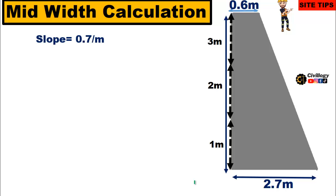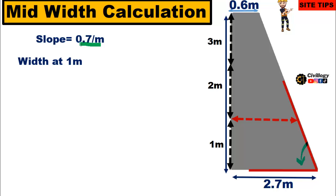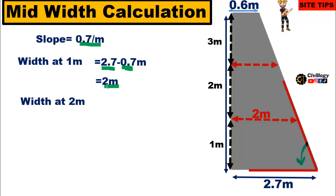Now let us calculate the widths at a height of 1 meter. When erecting the formwork for pouring of concrete, the slope per meter is 0.7 meters or 70 centimeters. So what will be the width at 1 meter? We will subtract 0.7, which is the slope per meter, from the base of the toe wall of 2.7, and we will get 2 meters. So the width at 1 meter will be equal to 2 meters. Similarly, if you want to calculate the width at 2 meters, it will be 2 minus 0.7, which is the slope per meter, and subtracting 0.7 from 2 meters gives 1.3 meters — which is the width at 2 meters.